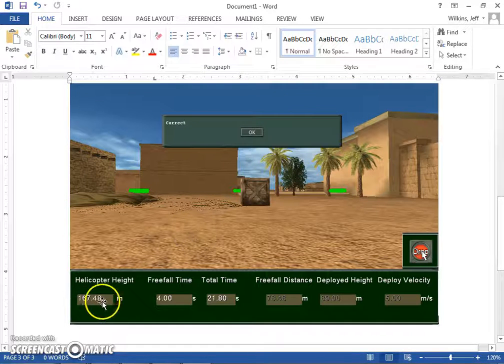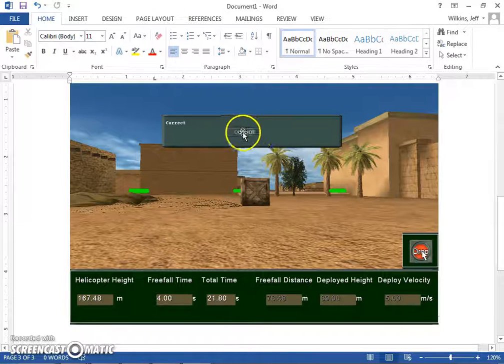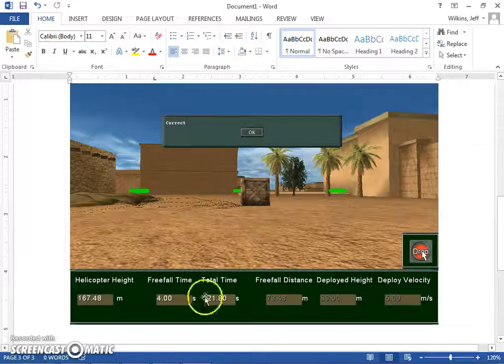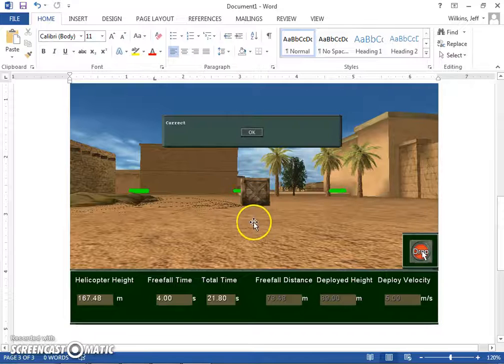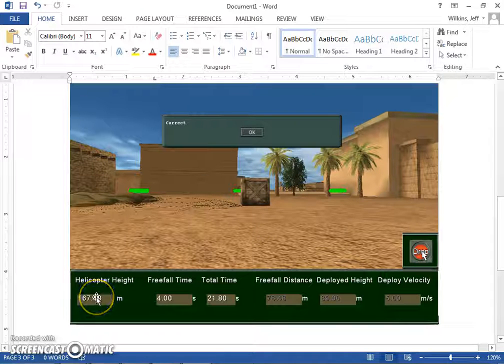Alright, so I'm back. So I put in those values that we calculated earlier, and you can see that it was correct. It did its freefall, it then deployed, and came safely to rest on the ground. So hopefully that helps.